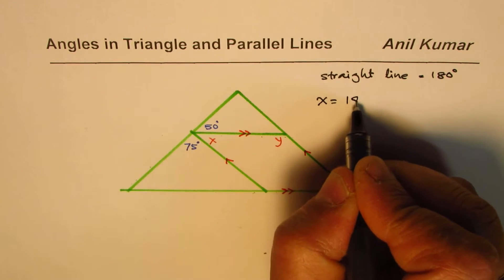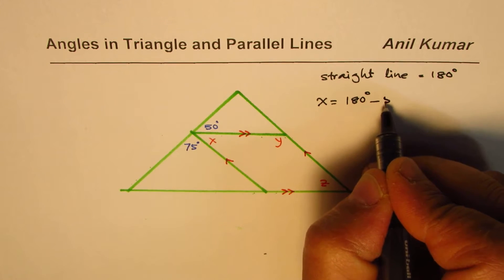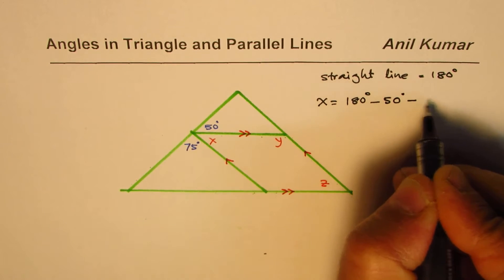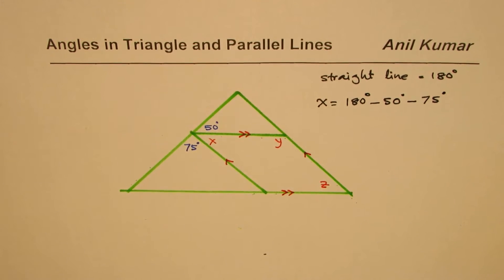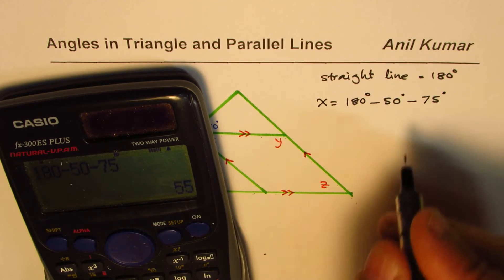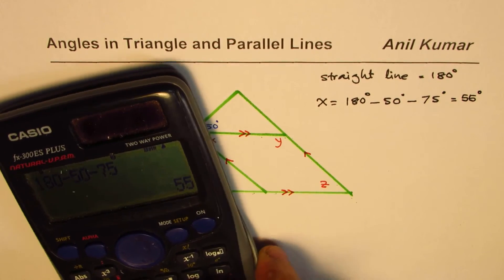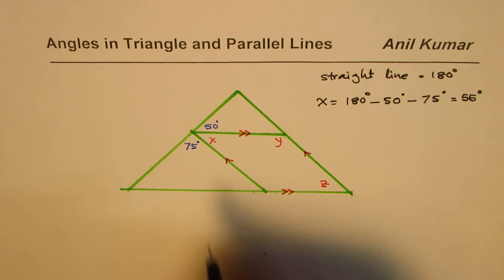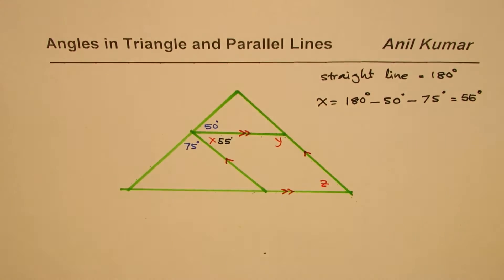x is equal to 180 degrees, take away the other two, which is take away 50 degrees and then take away 75 degrees. I will recommend the use of calculator. So 180 minus 50 minus 75 gets you the answer, which is equal to 55 degrees. So as soon as you get your angle, write it down. So we will write it down here, 55 degrees.